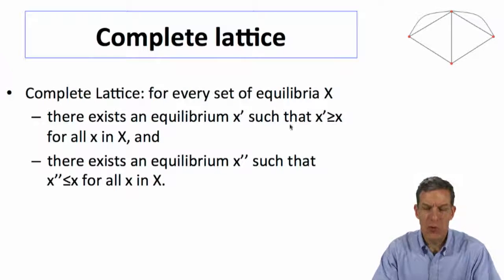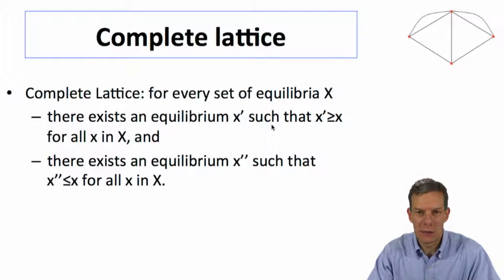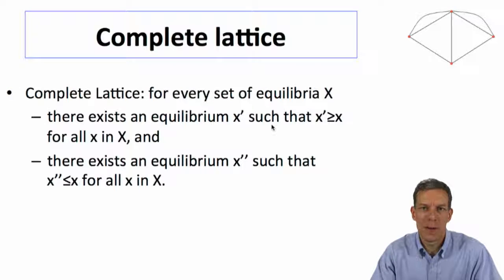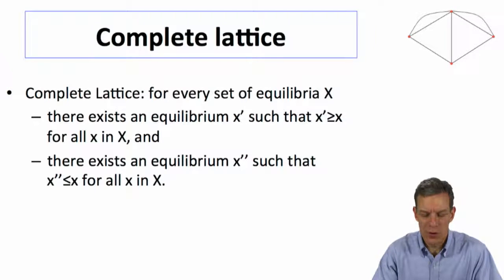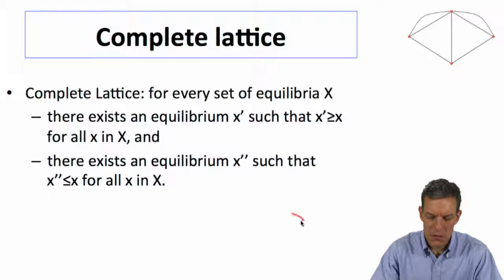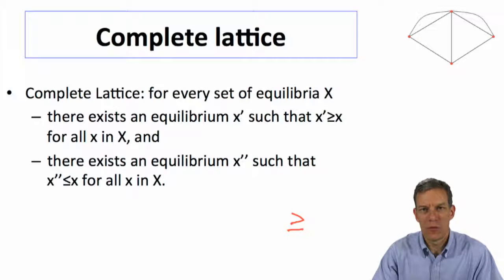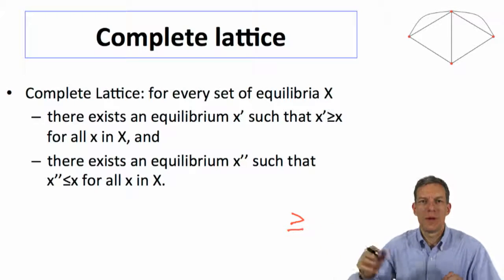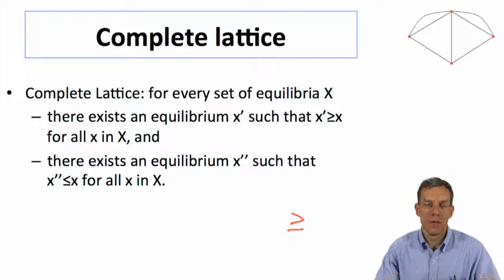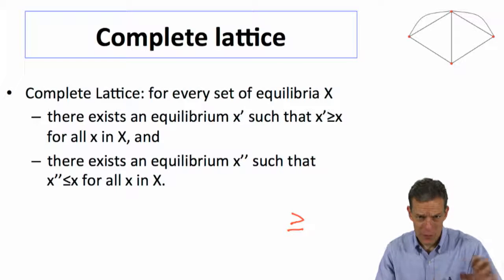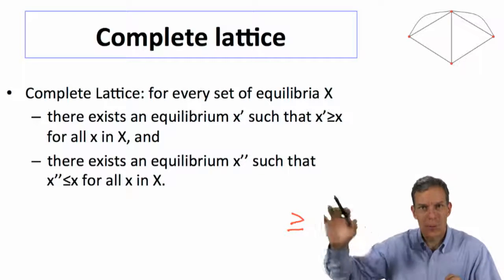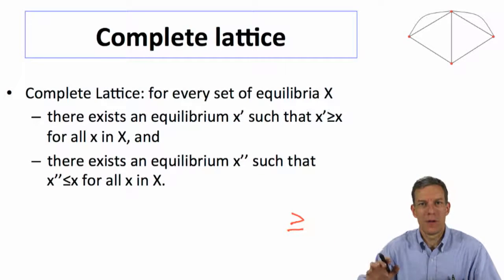In particular, what we're going to be looking at is equilibria. You've got some set of objects, and these are partially ordered — you've got some notion of a partial order, using the sign greater than or equal to. So you've got some notion that some things are bigger than other things. You don't necessarily have to be able to compare all objects, but some things will be bigger than others.